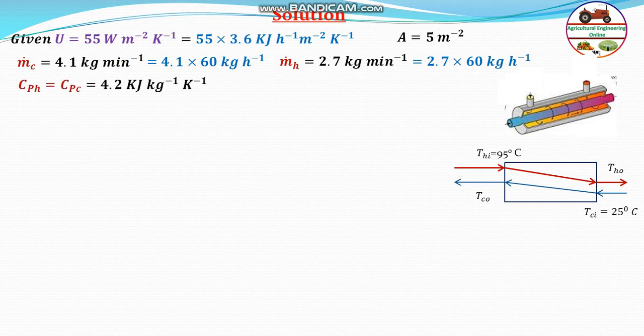The specific heat capacity for both hot and cold water is 4.2 kJ per kg per Kelvin. The heat capacity rate C for cold water equals the mass flow rate multiplied by the specific heat capacity, and similarly for hot water: C_hot equals the mass flow rate of hot water times the specific heat capacity.